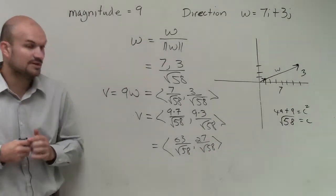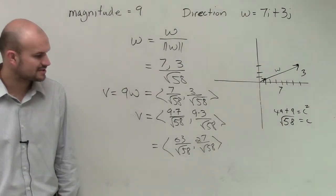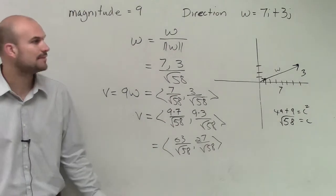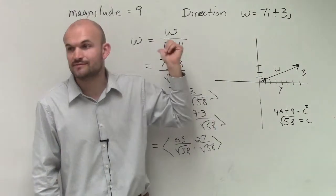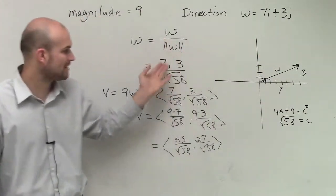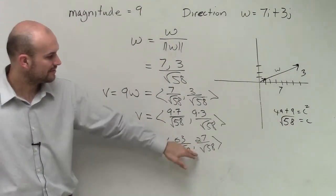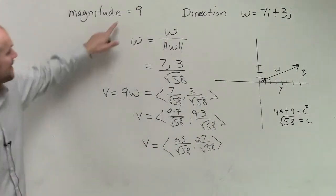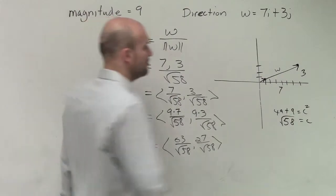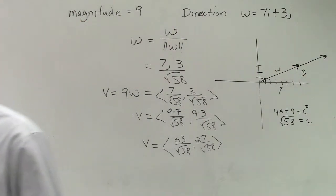And that's it. You could simplify those further, but for right now we'll leave them as the answer. The main thing to understand is: if given a vector's direction and you want a new vector with a different magnitude, you rewrite it as its unit vector, then multiply by the desired magnitude. This vector v has a magnitude of 9 but the same direction as w.